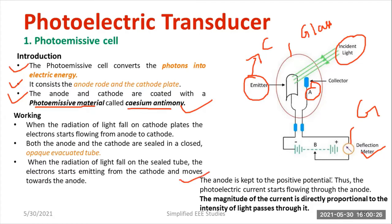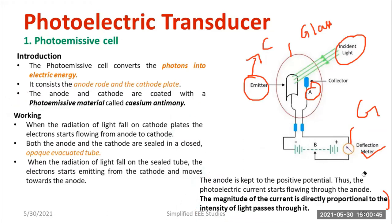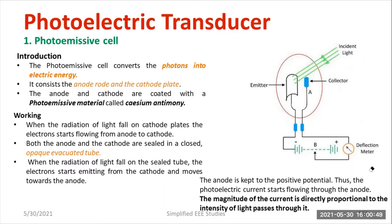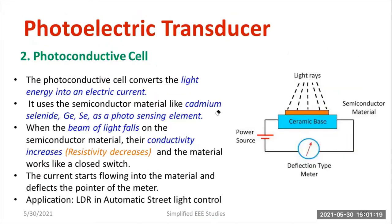The anode is kept at positive potential. Thus, the photoelectric current starts flowing through the anode. The magnitude of current is directly proportional to the intensity of radiation or intensity of light passing through it. So this is how photoemissive material operates: we have anode and cathode, both made up of suitable coating, with an opaque surface. As the incident light passes over the emitter, electron flow takes place, the circuit is completed, and you get deflection. Incident light is directly proportional to the current flowing through the device.